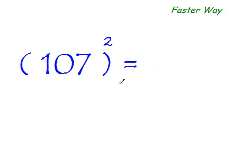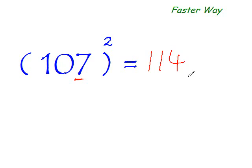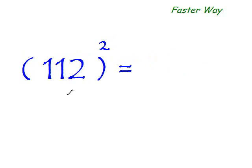Now find quickly: what is 107 squared? Add the distance from base 100 to the entire number: 7 plus 107 is 114. Two more digits to go — 7 squared is 49. So your answer is 11,449. That's it!